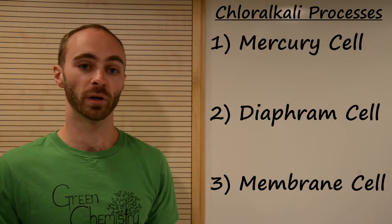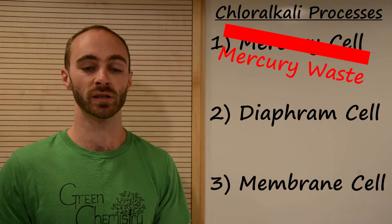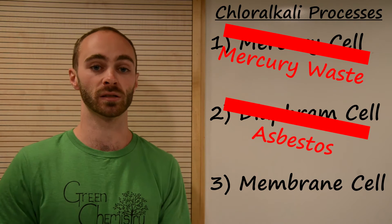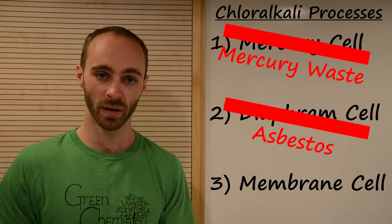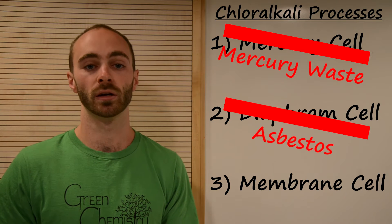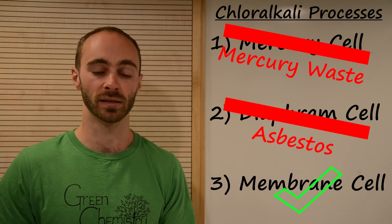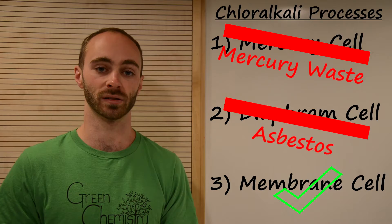The mercury cell creates hazardous mercury waste, whereas the diaphragm cell uses asbestos-based diaphragms. However, the membrane cell uses the cellulose membrane and is the least hazardous of all the chemical processes. All right, let's go!